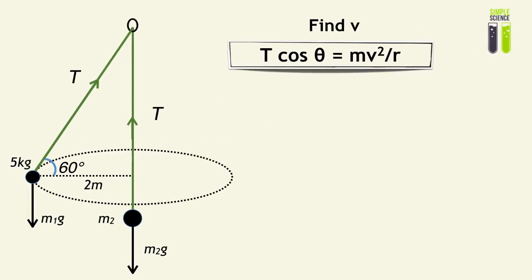Another common question would be to find V. Since we know that T cos theta, the horizontal component acting on M1, equals the centripetal force acting on it, we have to find the unknown value T first.